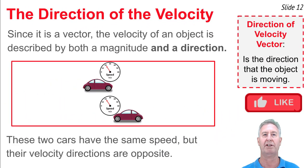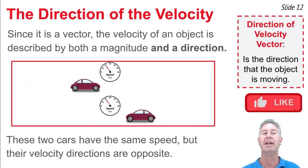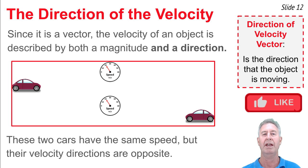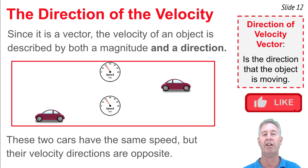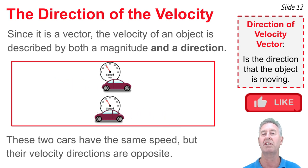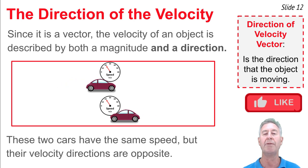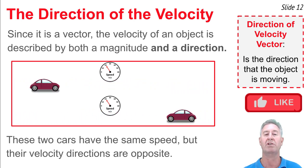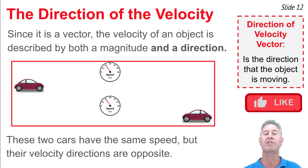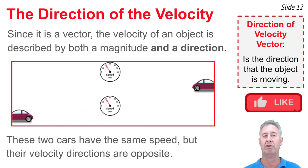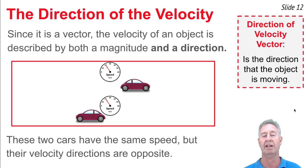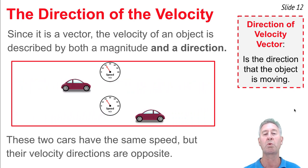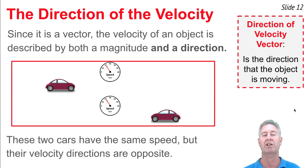When we say velocity is a vector, we mean that direction matters — it's not ignorant of direction, it's very conscious of it. Here we see the same two cars from earlier. We said those two cars have the same speed, but they're moving in different directions. Speed is the scalar quantity that ignores direction, but velocity is a vector quantity that must attend to direction. So we describe these two cars as having different velocities because they have different directions — one has a velocity of 20 meters per second to the right, and the other has a velocity of 20 meters per second to the left.